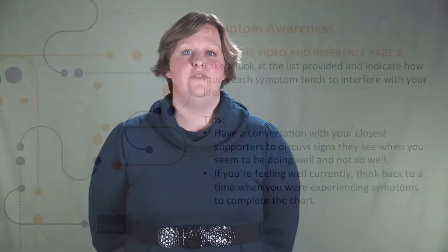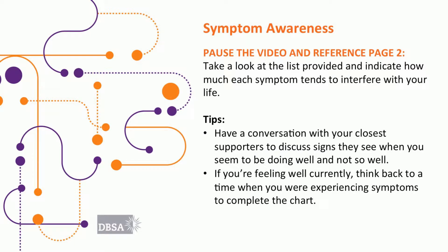As we talked about in session one, everyone experiences mood disorders differently. It can be helpful to identify the symptoms you most frequently experience. In the symptom awareness section of your plan, you want to identify common symptoms you experience when you are not feeling well. This way, you'll be more likely to realize if you are starting to experience an episode of depression or mania. Take a look at the list provided in the plan and indicate how much each symptom tends to interfere with your life. You may also wish to have a conversation with your closest supporters to discuss signs they see when you seem to be doing well and not so well. If you've not already completed this section, please pause the video while you do.